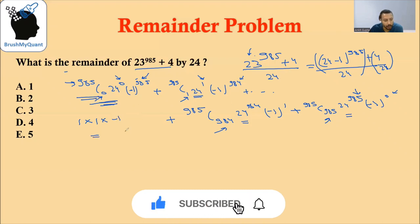So our problem is reduced to what is the remainder when minus 1 is divided by 24. If you want to solve this faster, as a shortcut, you can directly cancel 24 and write the remainder as minus 1 raised to 985. You can do it only when you have minus 1 here or plus 1 here. If you have other numbers, you will have to solve it further.